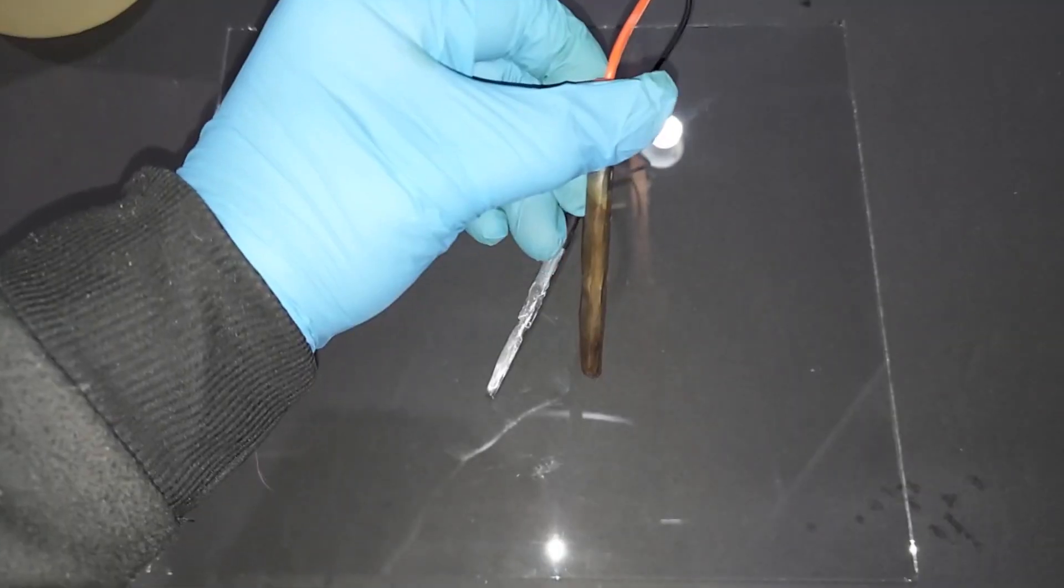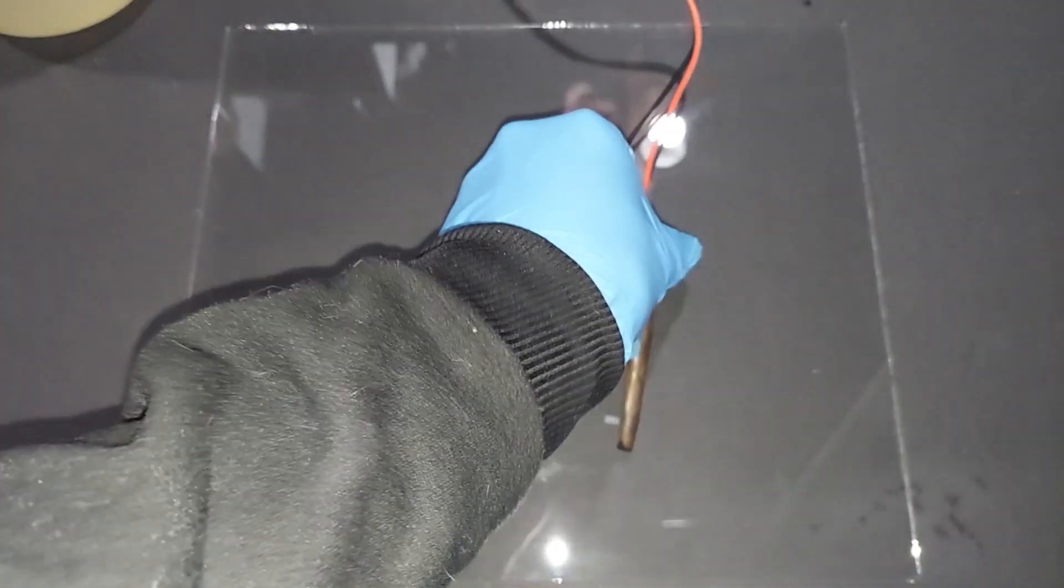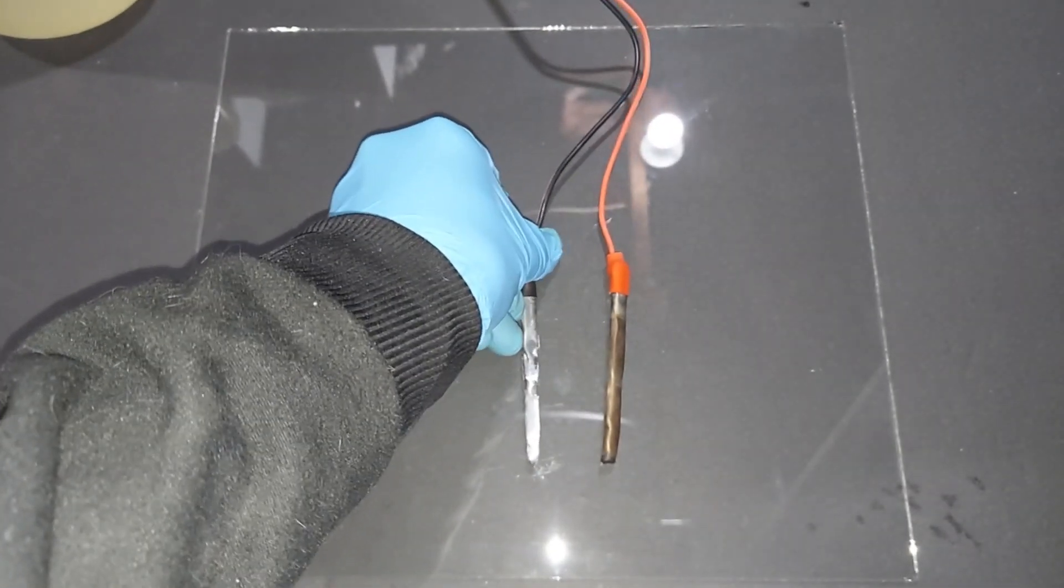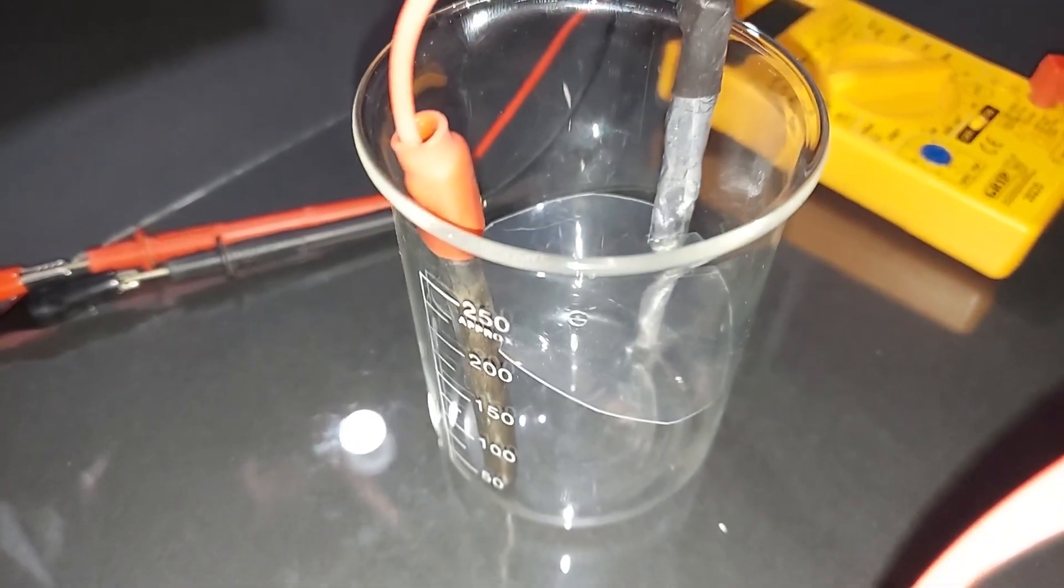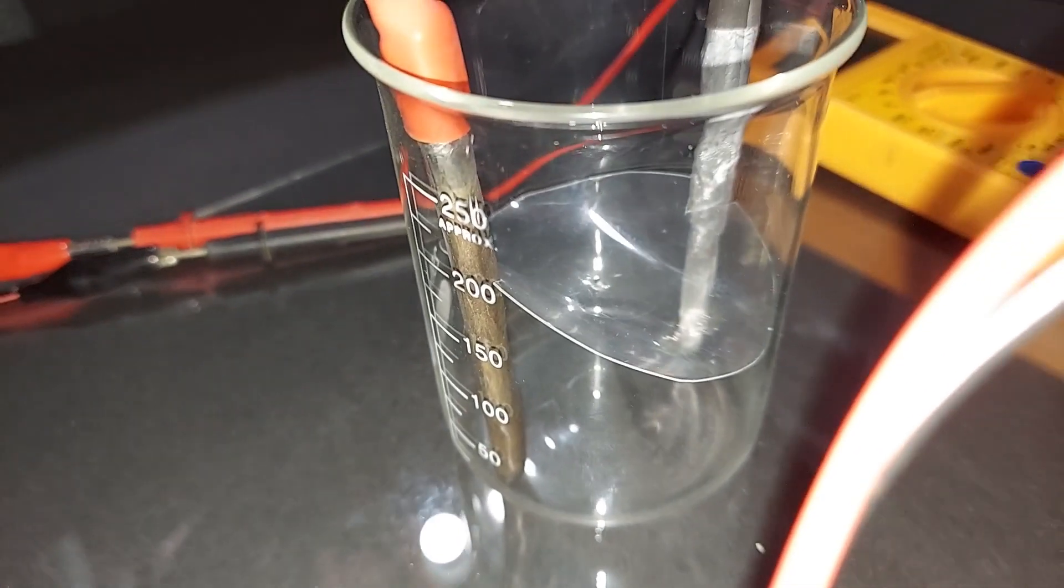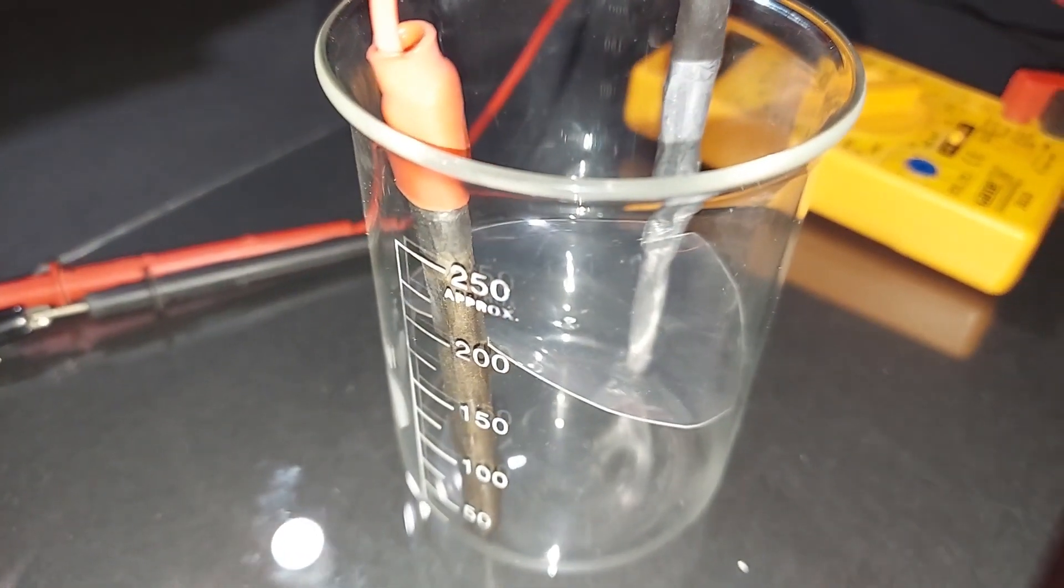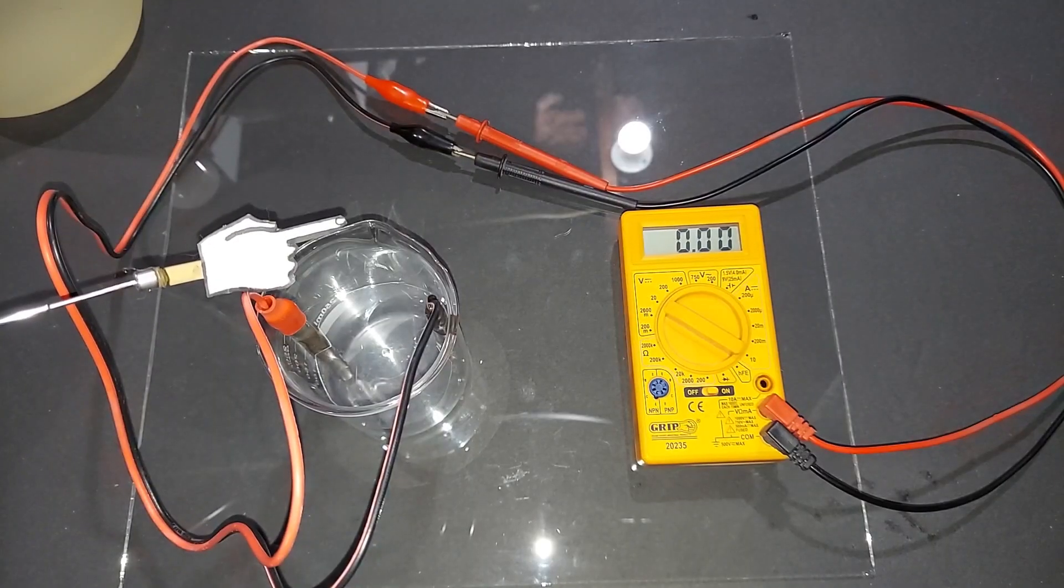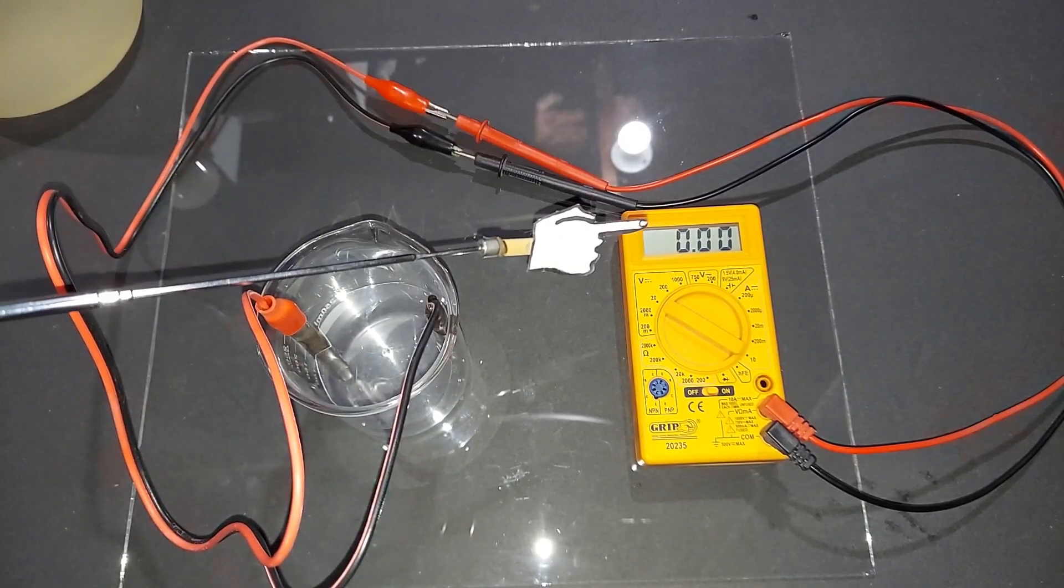Our lead dioxide electrode looks really good, and the next step is to put these both into fresh sulfuric acid to make our battery. For whatever reason, I could not get these clipped to the side properly, so I took a plastic top and cut it and jammed it between them. Plastic won't dissolve and it'll hold them apart nicely.